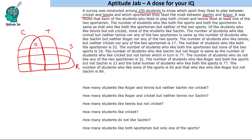Next, the number of students who like both sports and both sportsmen is the same as those who like both sportsmen but neither of the two sports. Both sports and both sportsmen is this region, and it equals those who like Sachin and Roger but neither cricket nor tennis. Let's call these values 'a'.